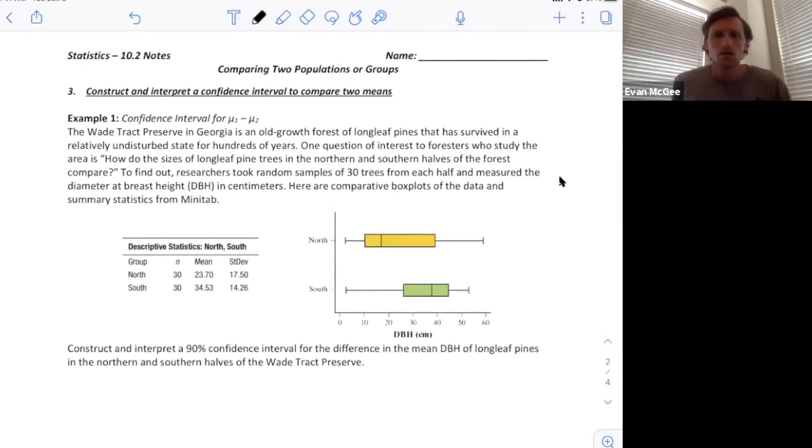Our first example for a difference between two means: the Wade Track Reserve in Georgia is an old growth forest of longleaf pines that has survived in a relatively undisturbed state for hundreds of years. One question of interest to foresters who study the area is how do the sizes of longleaf pine trees in the northern and southern halves of the forest compare?